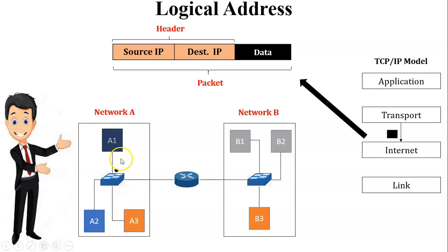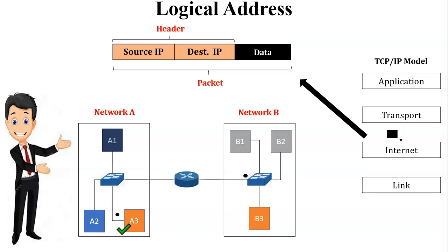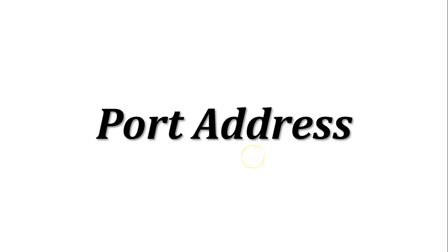Data passes from sender A1 to the switch. Both switches are manageable, so they can read the IP address as well as the MAC address. The switch reads the IP address and passes data to the next hop. Data is passed to the router as well as to receiver A3, who receives it successfully. The router works on the internet layer and reads the IP address, then passes data to the switch in Network B, which forwards it to B3. So B3 also receives the data successfully — covering both same-network and different-network data transfer via IP address.